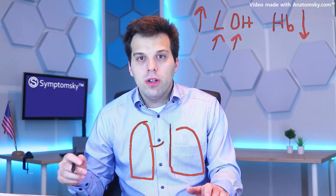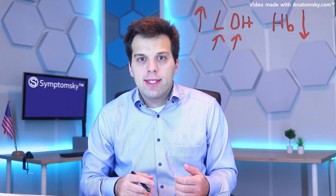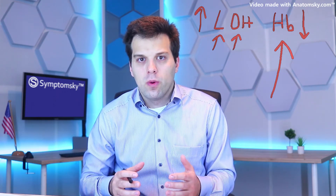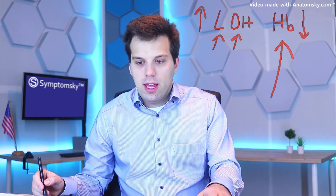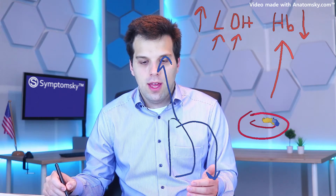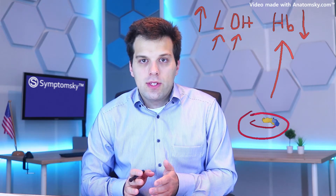When we talk about sickle cell anemia, we have to understand what it is. It's a hemoglobinopathy — we already mentioned hemoglobin. Sickle cell anemia is a hemoglobinopathy, meaning there is a problem with hemoglobin, a protein in our red blood cells. Red blood cells look something like a disc. This hemoglobin protein is responsible for carrying oxygen from our lungs to the peripheral parts of the body, such as the hand, the head, the brain, and everything else — basically supplying the body with oxygen.